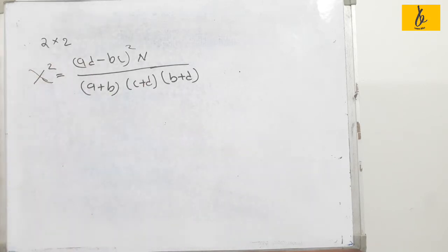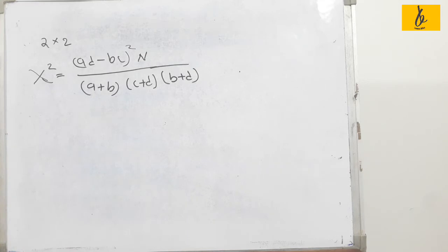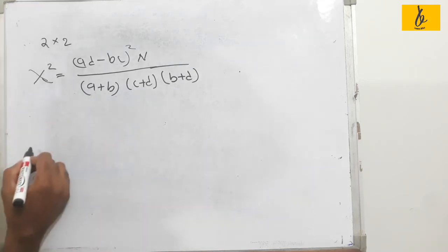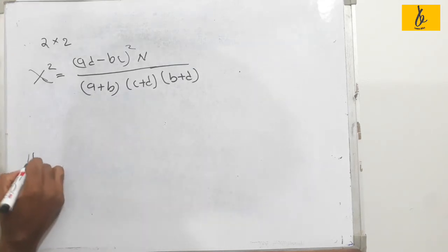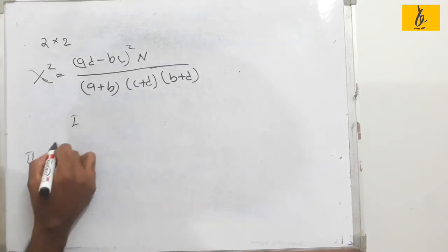We have two attributes. This is the first attribute and this is the second attribute — these are the two attributes used in the chi-square two-in-two table.